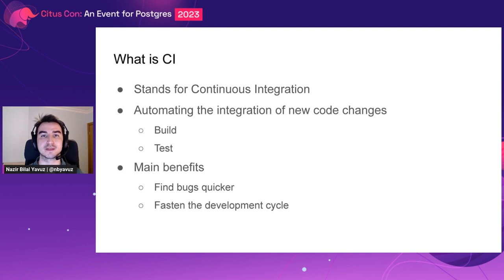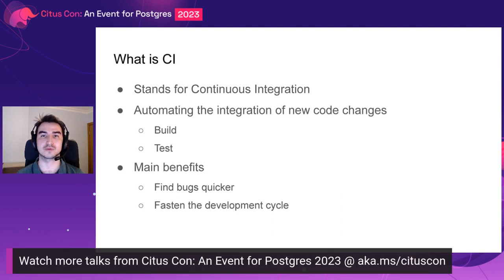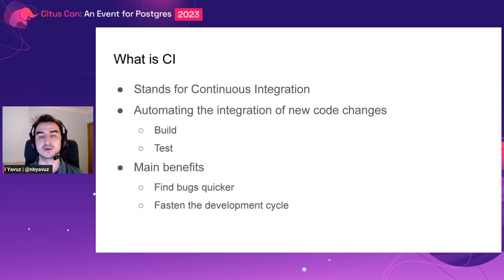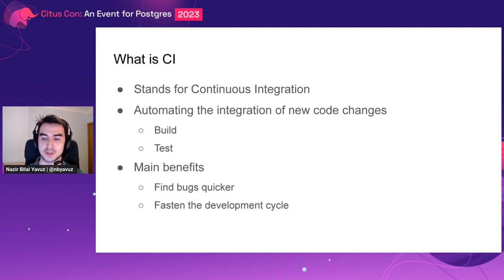What is CI? CI stands for Continuous Integration. Continuous Integration is the practice of automating the integration of new code changes into the main repository. It mostly consists of automation of build and test steps. The main benefits are that it helps to find bugs quicker and also it fastens the development cycle.